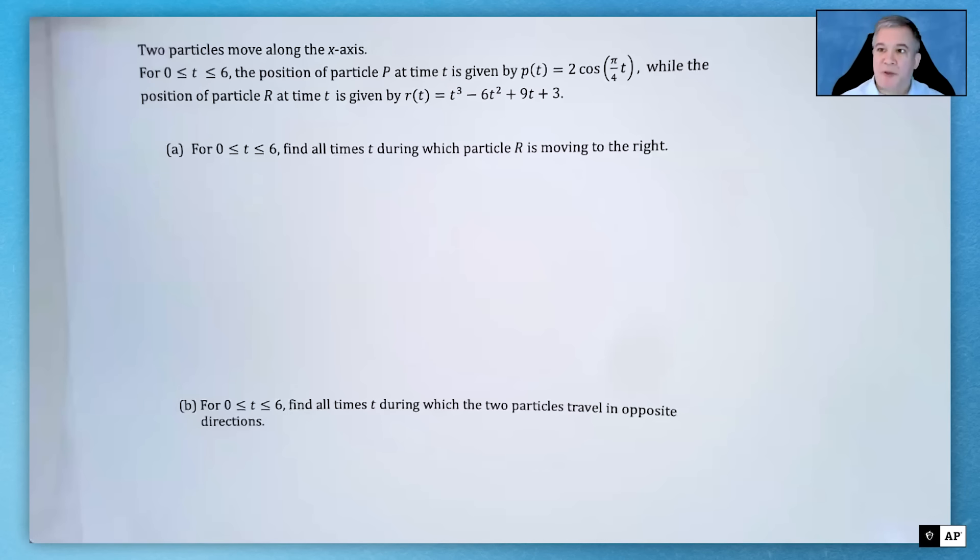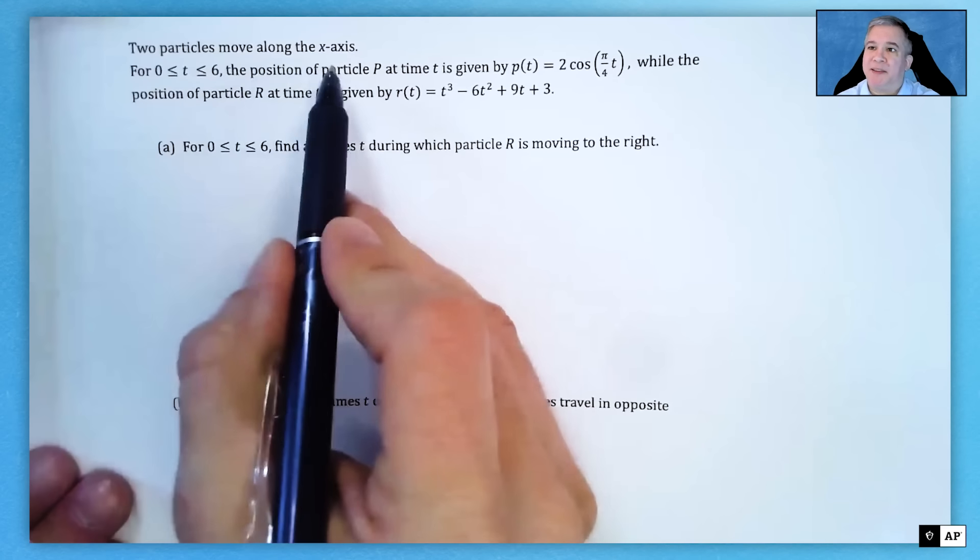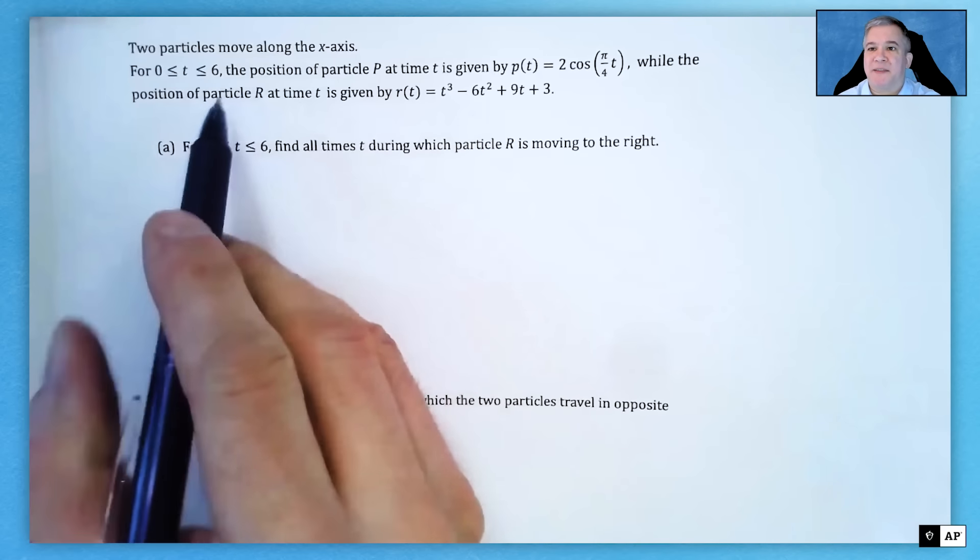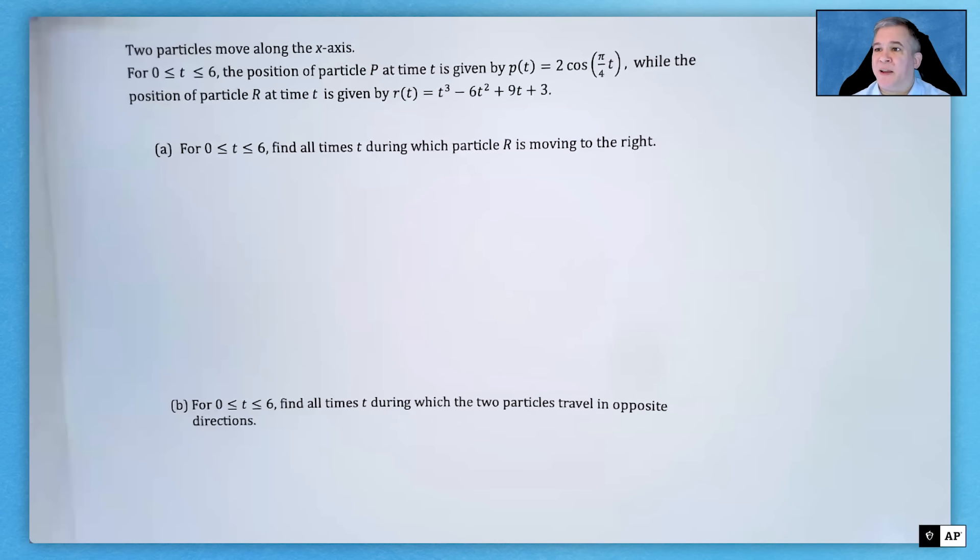Hopefully you've downloaded this, but we're going to read the problem to you. We're doing a particle motion problem. It says two particles are moving along the x-axis. Everything's horizontal movement on the x-axis for time 0 to 6 inclusive. The position of particle P at time t is given by P(t) equals 2 times the cosine of π/4 times t, while the position of particle R at time t is given by R(t) equals t³ minus 6t² plus 9t plus 3. Part A: for time 0 to 6 inclusive, find all times t during which particle R is moving to the right.